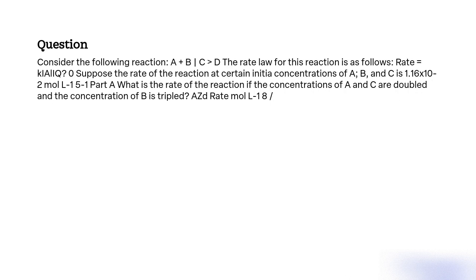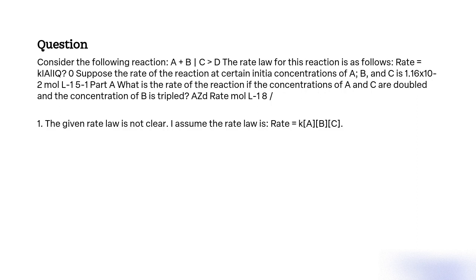What is the new rate of the reaction when the concentrations of A and C are doubled and the concentration of B is tripled, with the objective of determining the effect of changing the initial concentrations on the rate of the reaction? The given rate law is not explicitly stated, so I assume the rate law is: Rate = k[A][B][C].